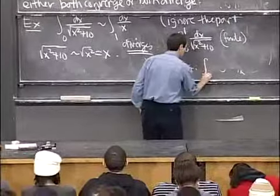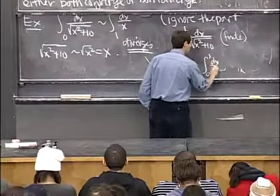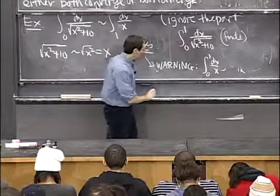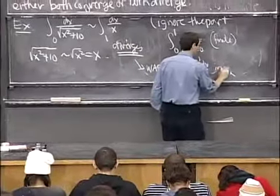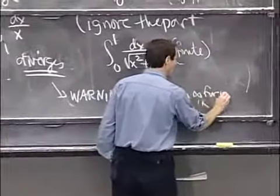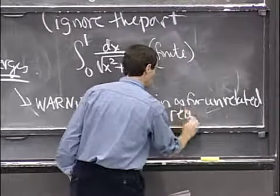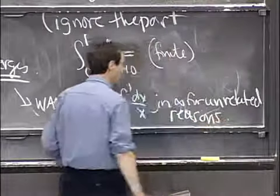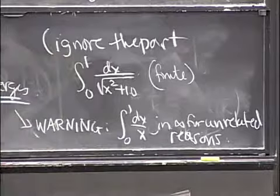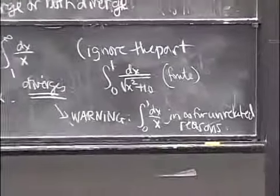Which is that this guy here is infinite for other reasons. Unrelated reasons. The comparison that we are trying to make is with the tail as x goes to infinity.